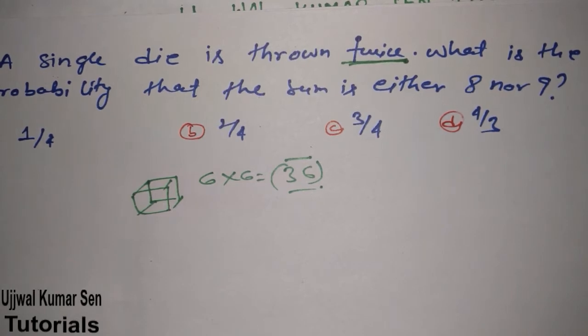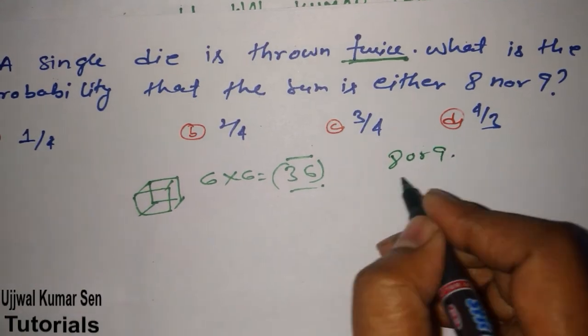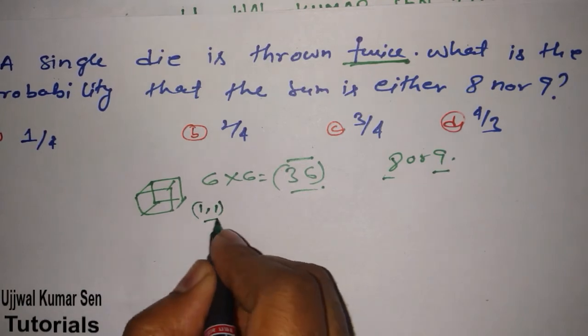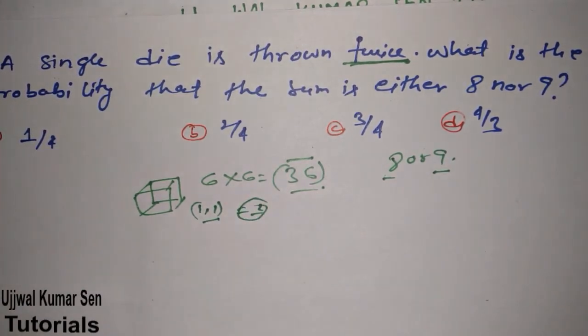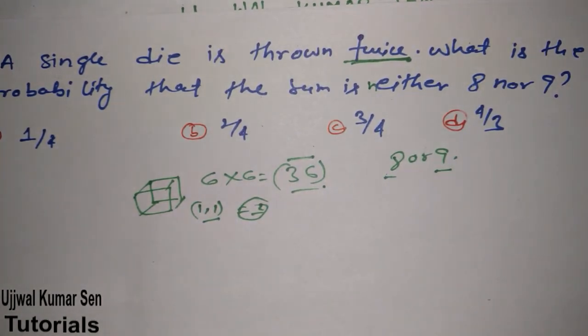Well, the question is still remaining. It's a two-line question but there are many things to understand to solve this question with accuracy. Now, what is the probability that the sum is either eight or nine? We need to know this 8 or 9 sum. Let me share with you: suppose that it comes 1 and 1, the sum is 2. In this way, what we have to find out is that the sum is either - it's neither, not either. Yeah, 'n' is missing. Neither 8 nor 9 we have to find out, right?